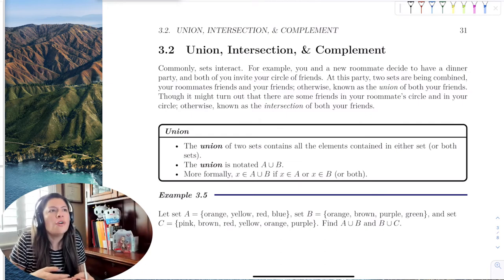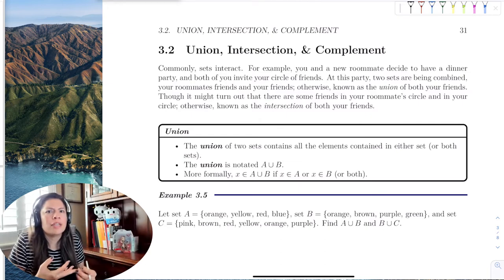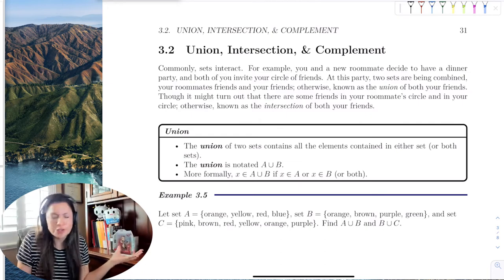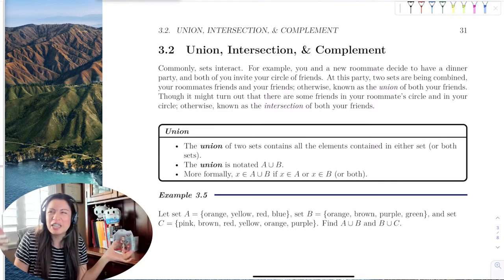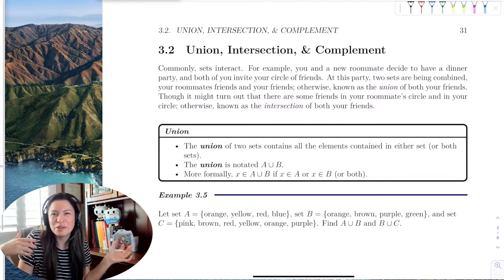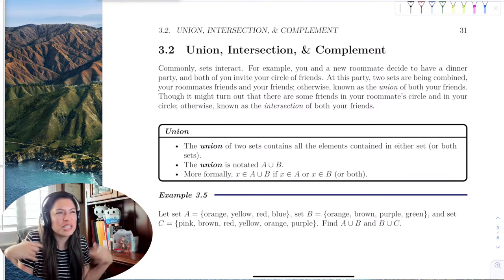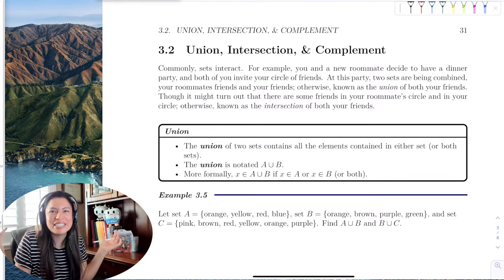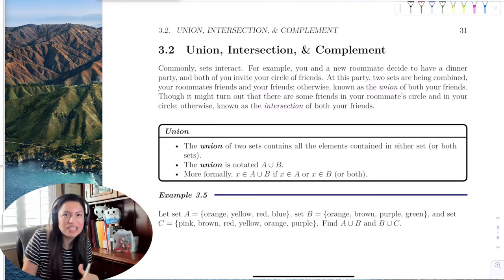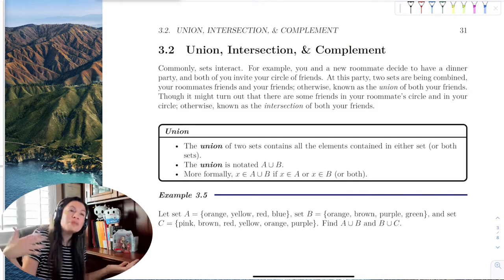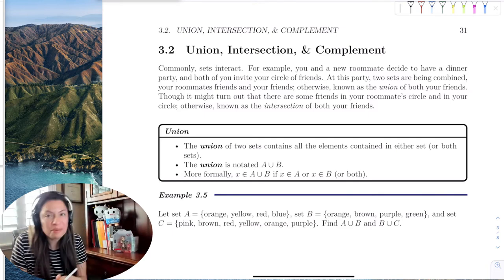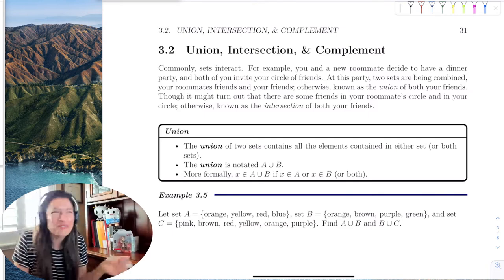Hopefully we don't have any friends that are neither of your circle of friends show up — like the guy down the street who hears there's a party going on and you have no idea who he is. Let's hope that person doesn't come. But that would be called the complement of your circle of friends.